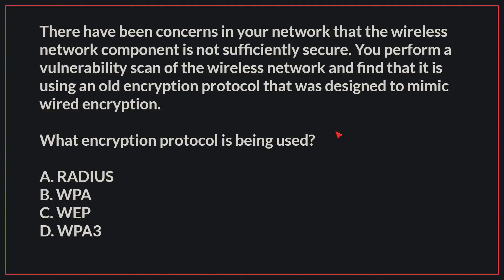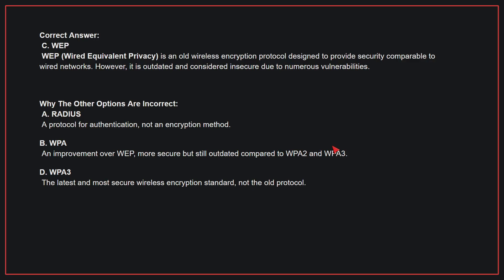There have been concerns in your network that the wireless network component is not sufficiently secure. You perform a vulnerability scan of the wireless network and find that it is using an old encryption protocol that was designed to mimic wired encryption. What encryption protocol is being used? The correct answer is C, WEP. WEP is an old wireless encryption protocol designed to provide security comparable to wired networks. However, it is outdated and considered insecure due to numerous vulnerabilities.